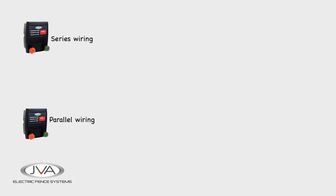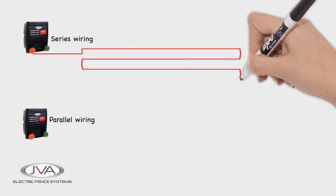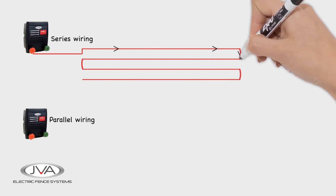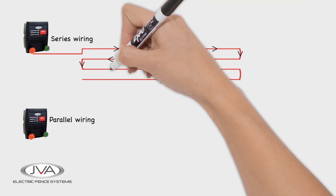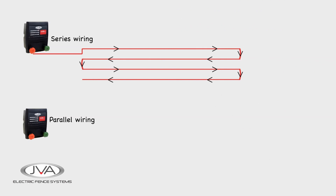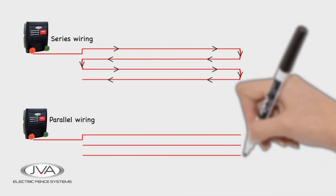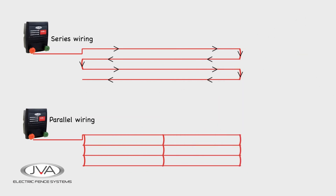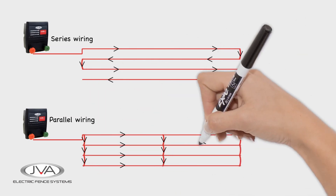An electric fence can be wired in two ways: series or parallel. In a series wired fence, the wire strands are connected at alternating ends, resulting in one long strand. The current flows along it like this. In a parallel wired fence, the wires are joined at intervals along the fence and at both ends, so the current on the line looks like this.